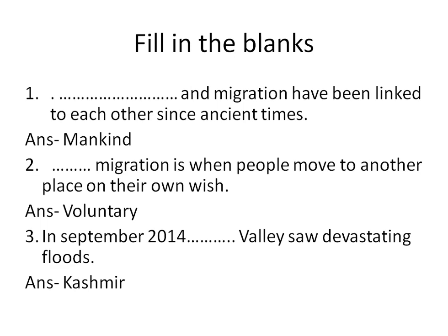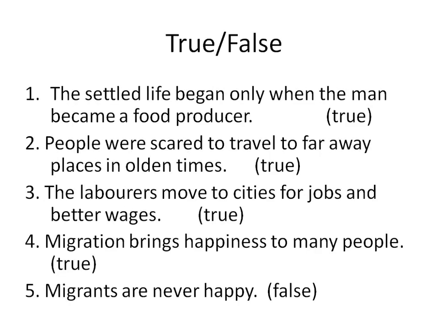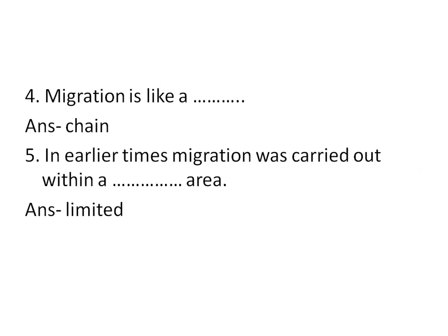Number 3: in September 2014, dash Valley saw devastating floods. Answer is Kashmir. Number 4: migration is like a dash. Answer is chain.